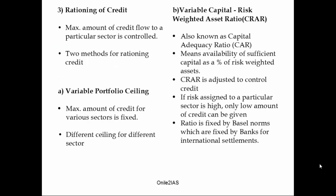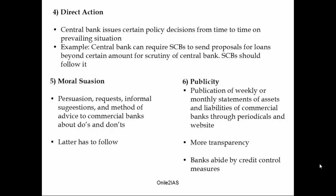The next measure is direct action. Sometimes RBI issues certain policies to scheduled banks which they are supposed to follow. For example, RBI can ask scheduled banks to send proposals for loans beyond a certain amount for scrutiny by RBI, keeping lending under check. The next measure is moral suasion — persuasion using informal suggestions, advice, and do's and don'ts given by RBI to commercial banks. The last measure under qualitative measures is publicity, where banks are expected to post monthly statements of assets and liabilities on websites and periodicals, bringing transparency and ensuring adherence to credit control measures.